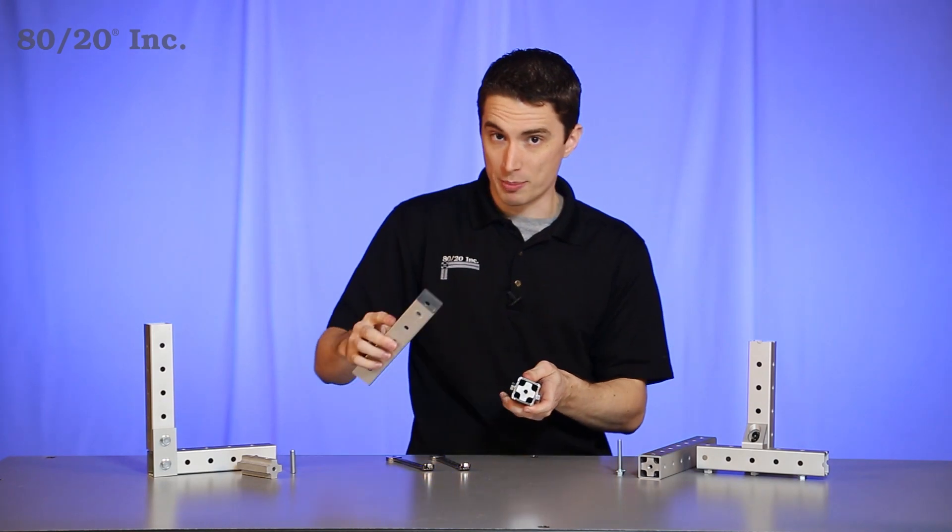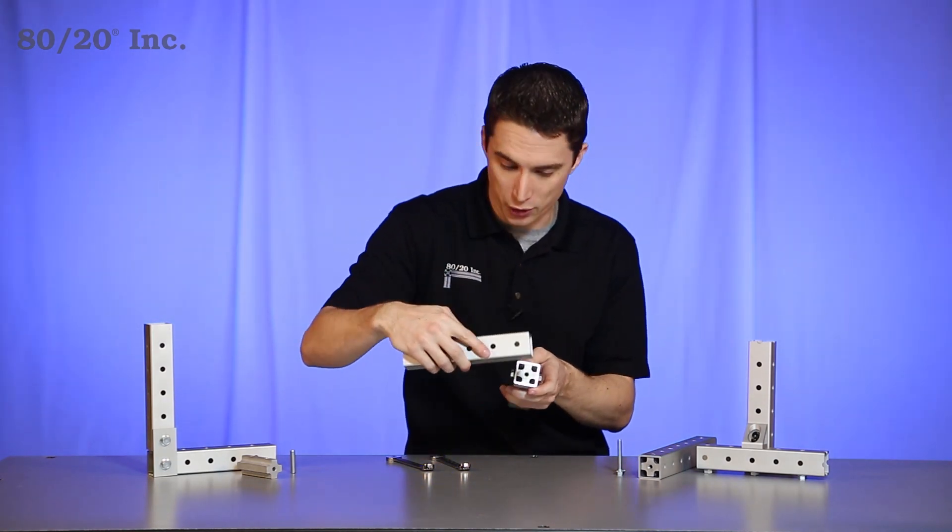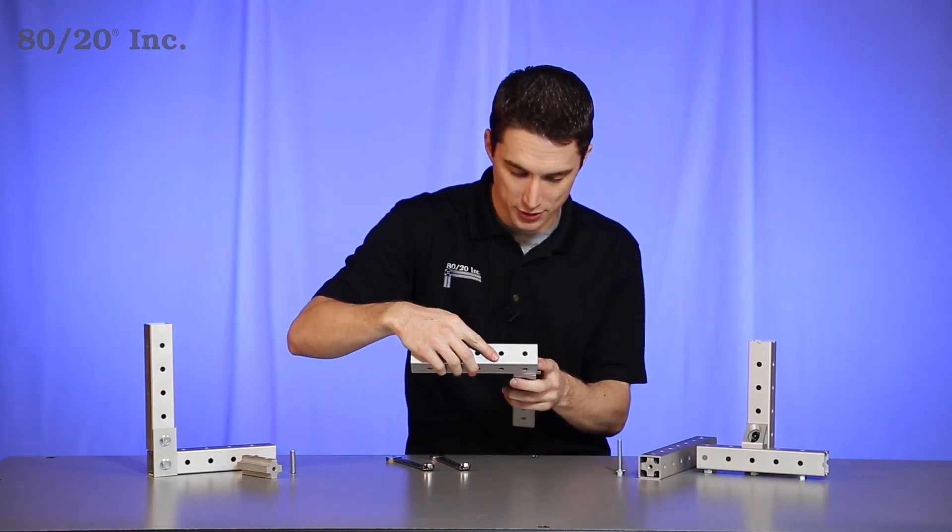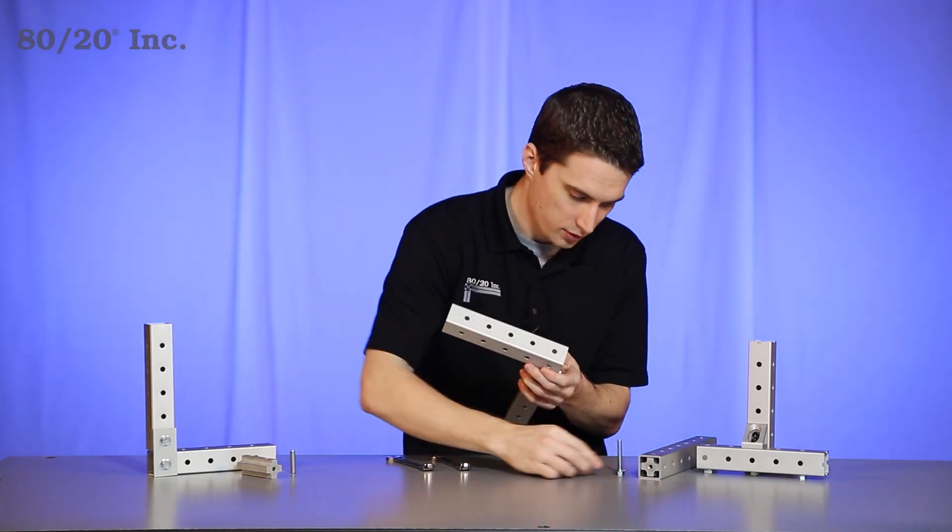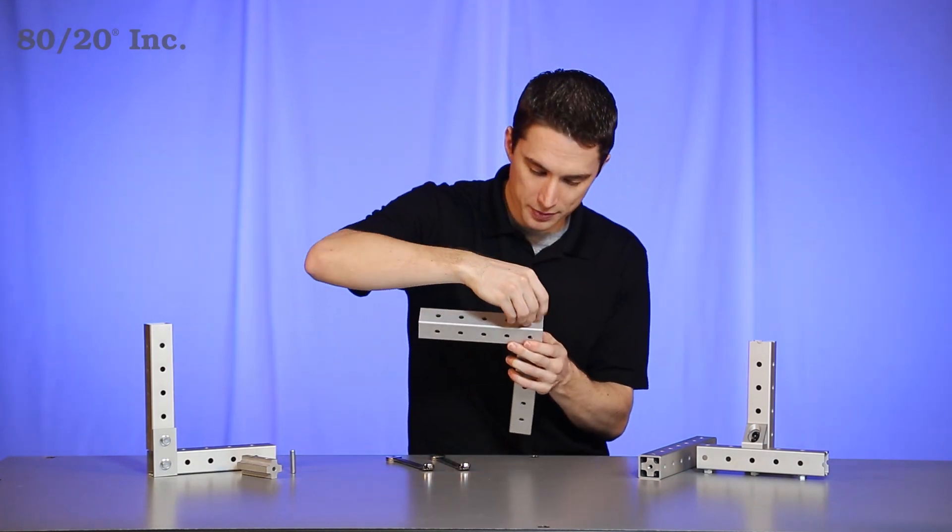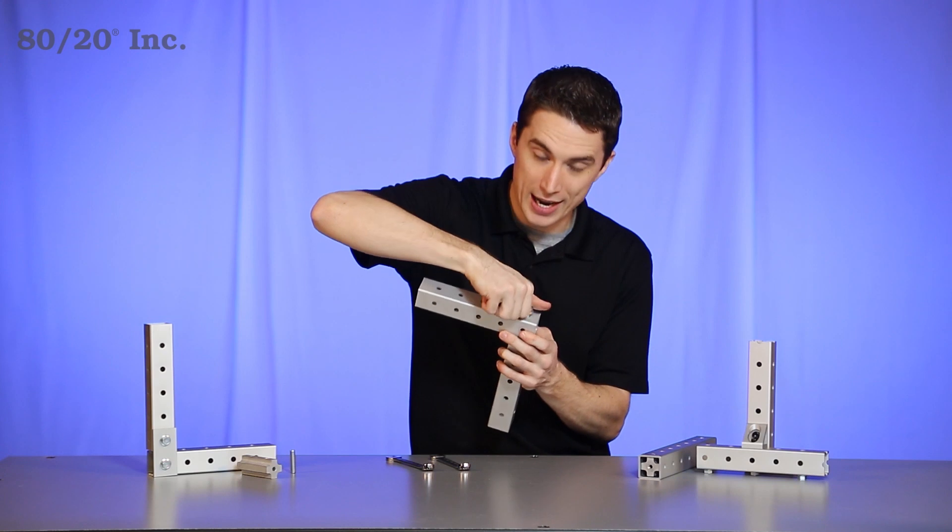From there, we're ready for our other bar where we're going to line up our pre-drilled hole over the end of the tube insert. We'll take our bolt, slide it in there and start hand tightening it down.